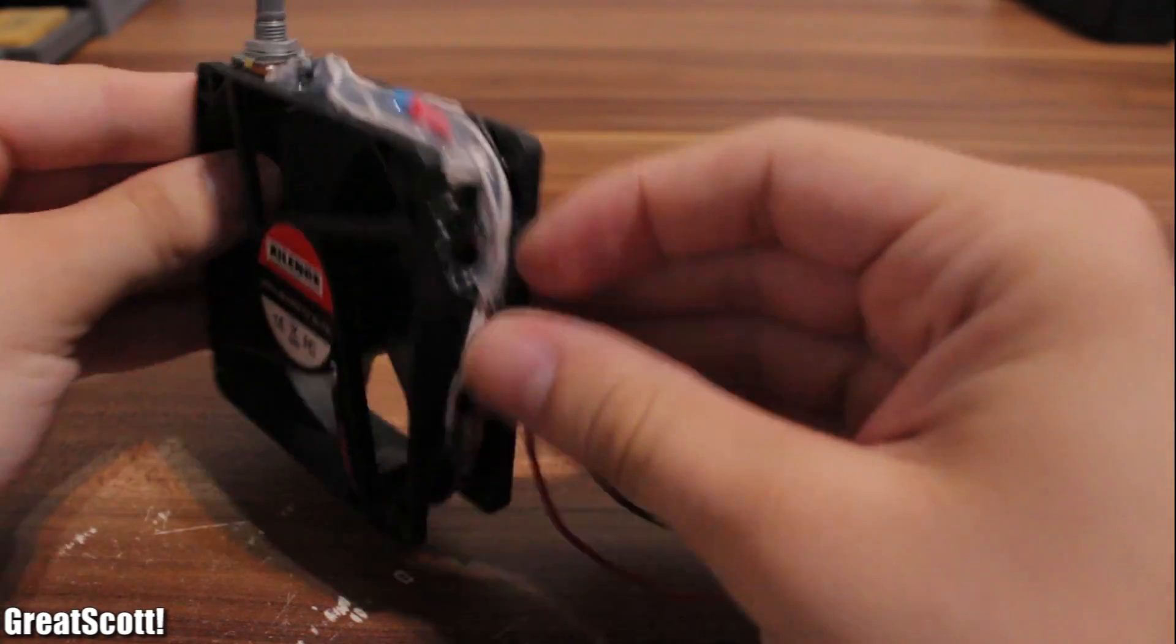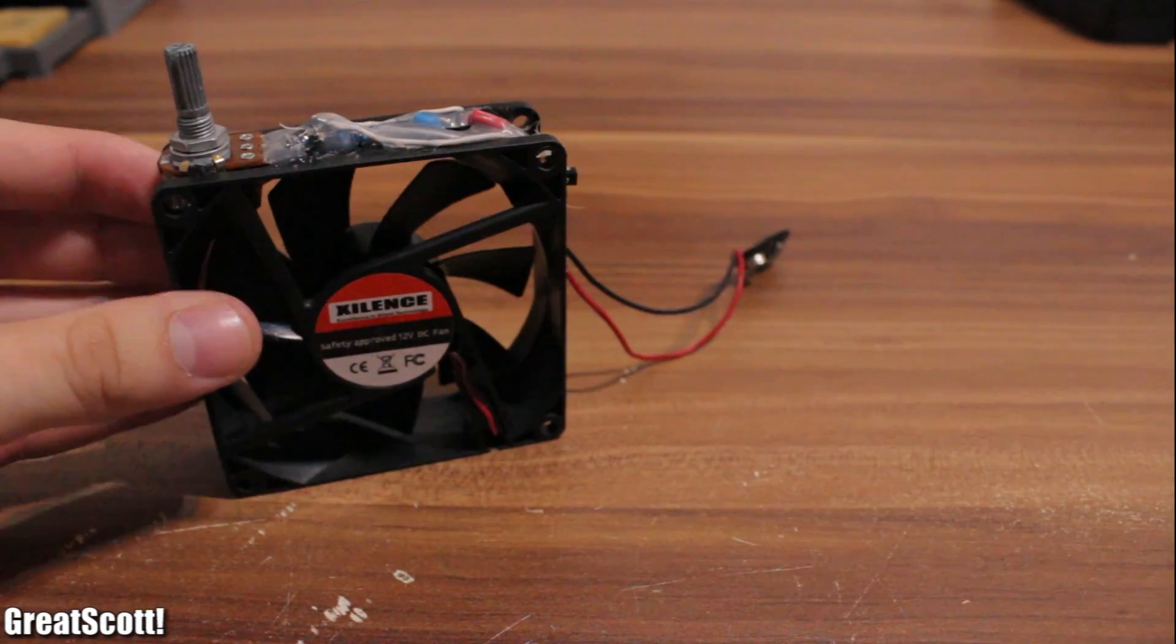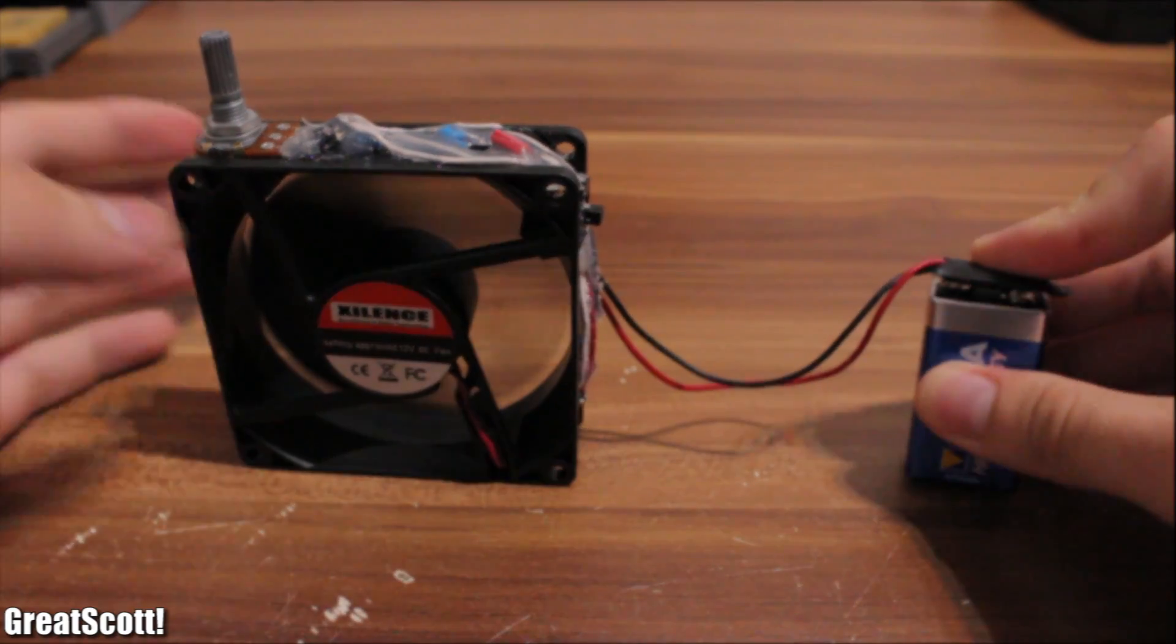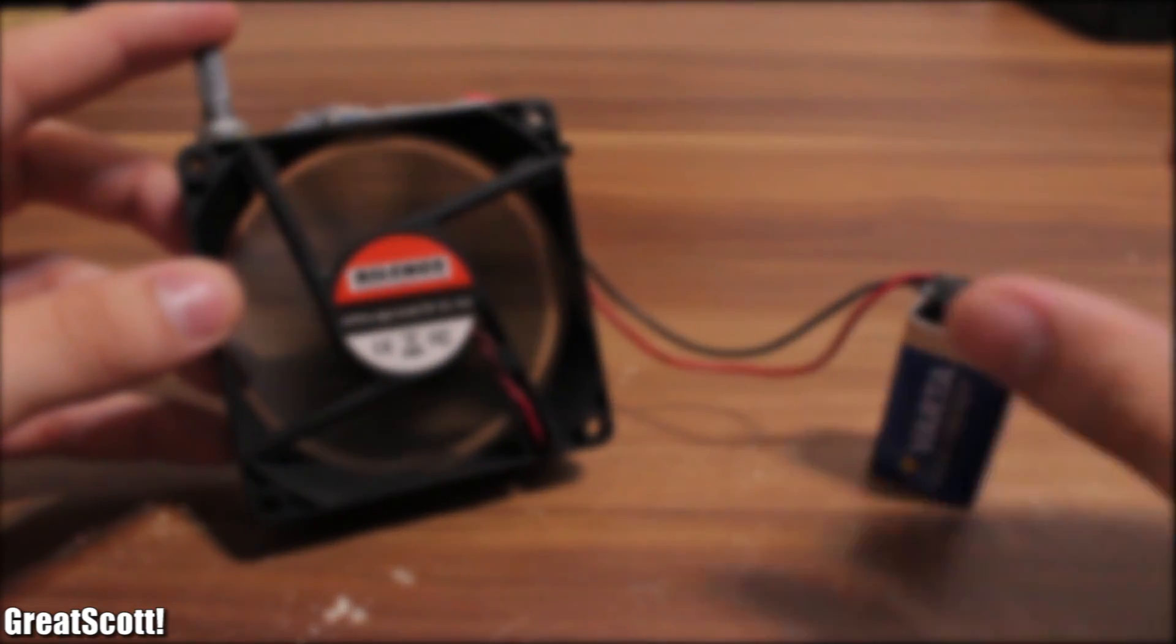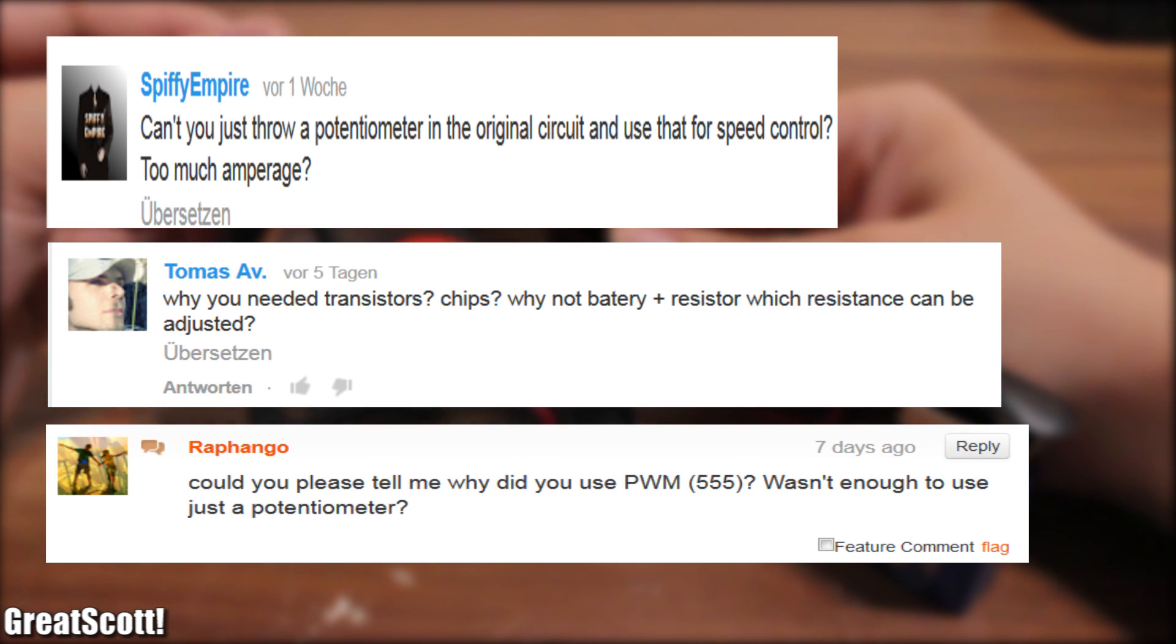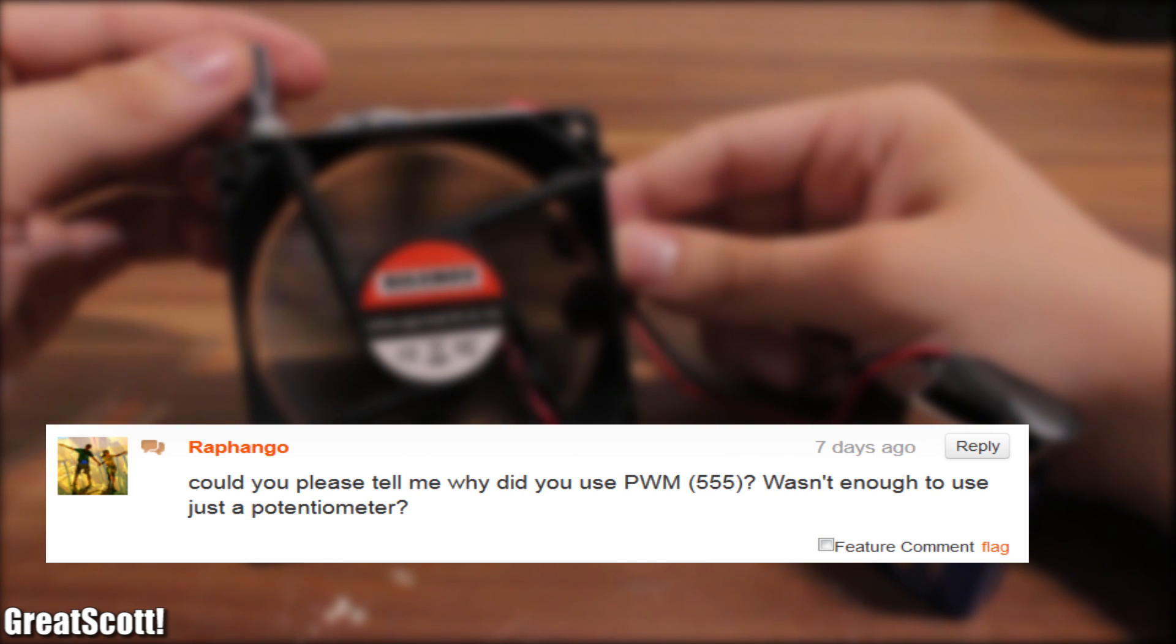I showed you how to build this modified fan in a previous video and it's still useful and going strong. But there's been a repetitive question about the speed control. Why am I using PWM instead of just putting a potentiometer in series to the fan?